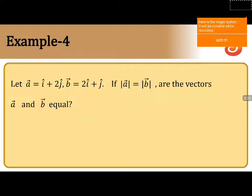We have to check whether the vectors A and B are equal or not. A vector is i-cap plus 2j-cap, while B vector is 2i-cap plus j-cap.